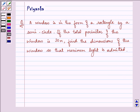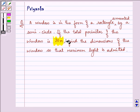Hello and how are you all today? The question says a window is in the form of a rectangle surmounted by a semi-circle. If the total perimeter of the window is 30 meters, find the dimension of the window so that maximum light is admitted.